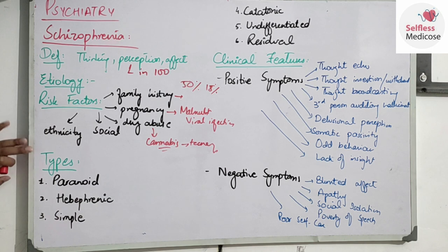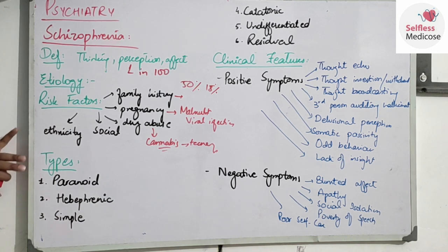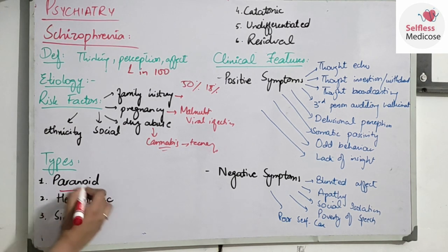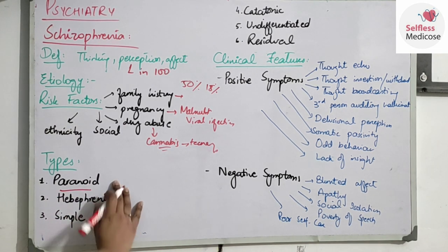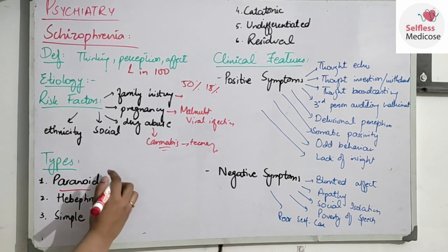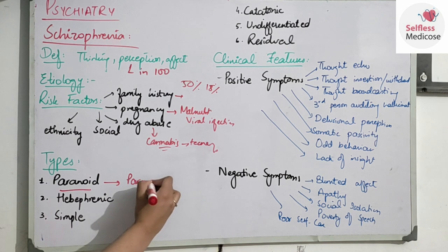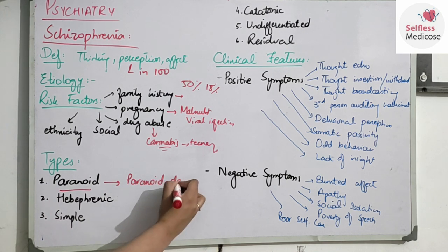Types — you should know the types for diagnosis, MCQs, and VIVA. So you have to know that each type is different. First, Paranoid Schizophrenia — in Paranoid Schizophrenia, it is characterized by paranoid symptoms or paranoid delusions.